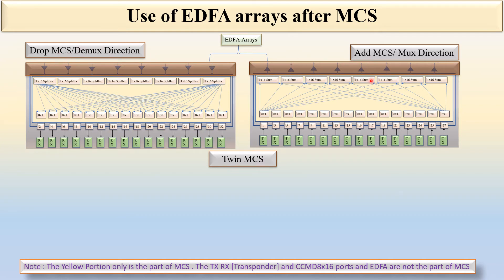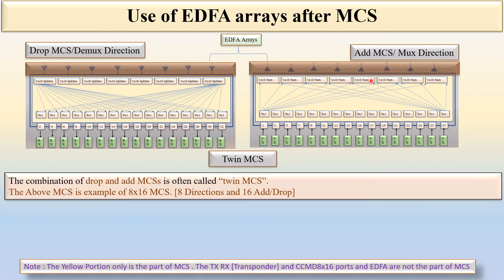The combination of the drop MCS and add MCS is called the Twin MCS. The FM MCS is an example of an 8x16 MCS, which has 8 directions and 16 add/drop ports.